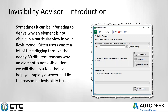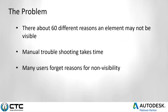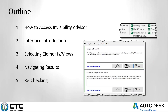We're going to discuss how you can rapidly discover, fix, and find all the reasons for the invisibility issues you might be having in your project. There are 60 different reasons why an element might not be visible, and a lot of troubleshooting time gets wasted manually going through them — many of us forget different reasons why something may not be visible.